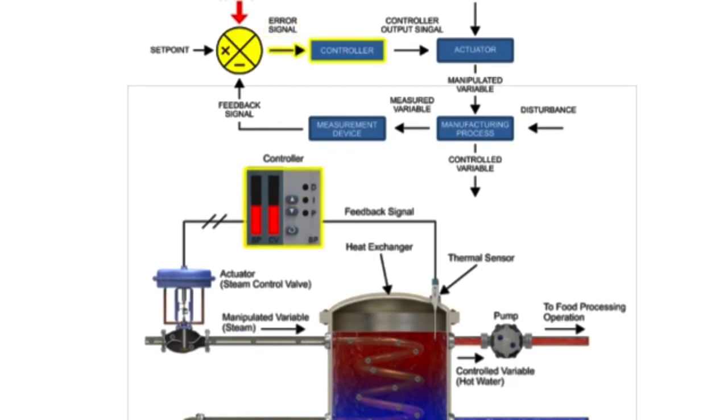The controller is the brain of the system. It receives an error signal as its input and provides an output signal to the final control element, or actuator. A signal from the controller causes the controlled variable to match the set point using the actuator of the system.